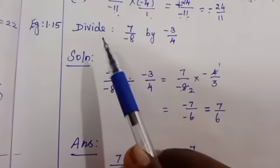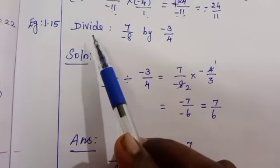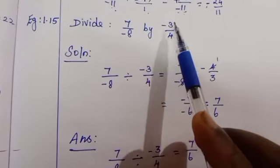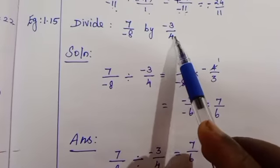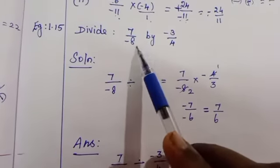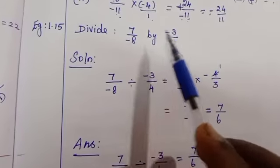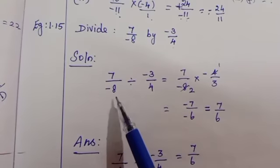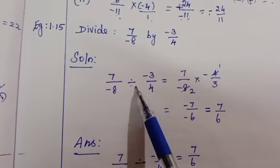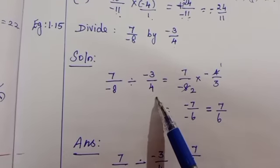Next one is division of rational numbers. Divide 7/(-8) by -3/4. The given problem is rewritten as this form: 7/(-8) ÷ (-3/4).